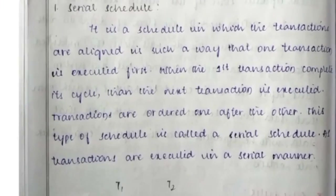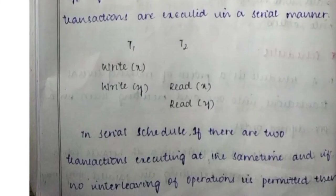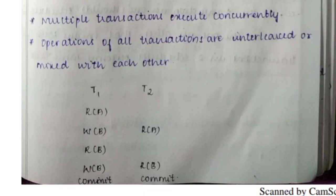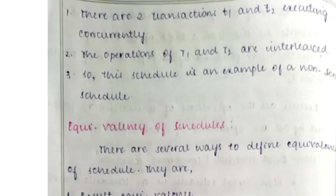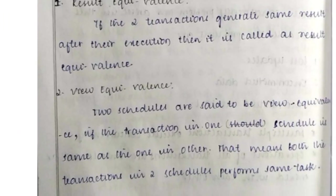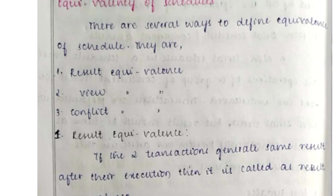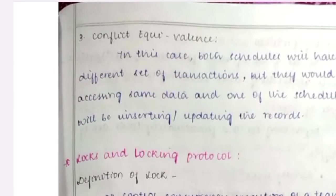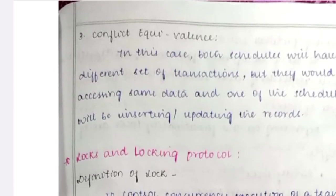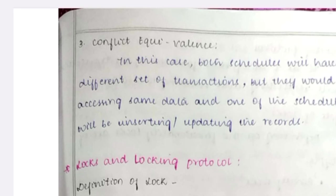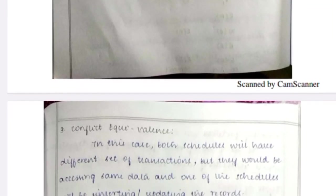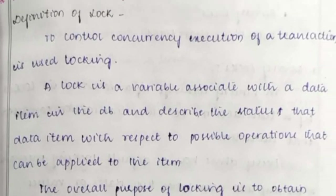It is better to learn these concepts directly as they are technical concepts. Next, we will discuss lock and locking protocols. What is meant by lock? To control the concurrent execution of transactions is known as a locking system.